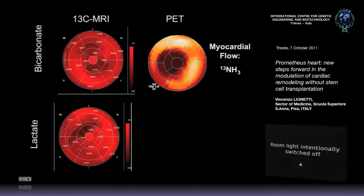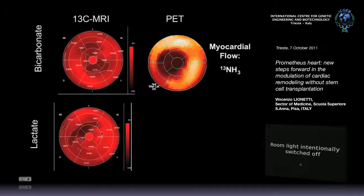We obtain the same image in a pig, which is more similar to humans. With the technology we are developing — hyperpolarization using magnetic resonance imaging — we inject pyruvate hyperpolarized with a different state of magnetization of the nucleus. In one shot you can see in the same area the metabolism of the pyruvate: how much lactate is there or how much bicarbonate, and also alanine or hydrogenated pyruvate. Because bicarbonate is an index of aerobic metabolism and lactate is an index of anaerobic metabolism.